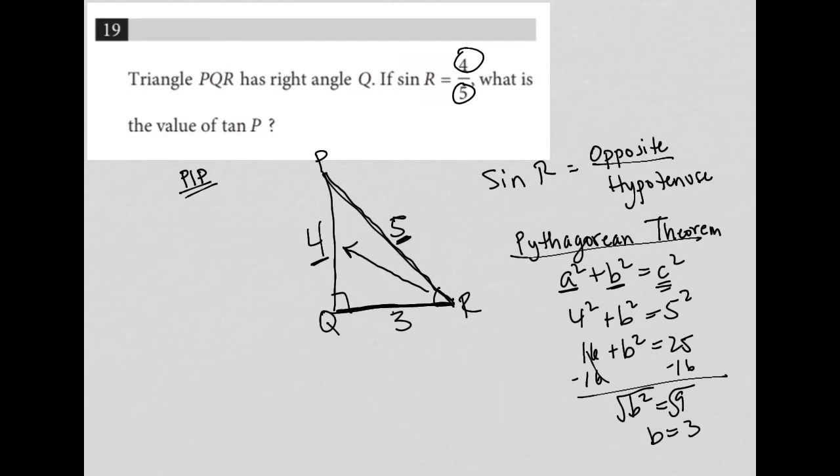I could have gotten there much quicker by remembering, and I'll go up to the top of my page, that there's a special right triangle that is called a three, four, five ratio. So as soon as you see two out of the three options here, we had four and five, we automatically know the other side must be three.